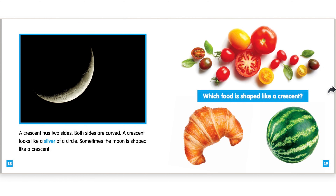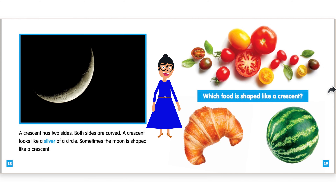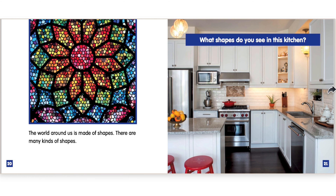A crescent has 2 sides. Both sides are curved. A crescent looks like a sliver of a circle. Sometimes the moon is shaped like a crescent. Which food is shaped like a crescent? The world around us is made of shapes. There are many kinds of shapes. What shapes do you see in this kitchen?